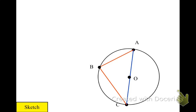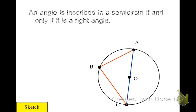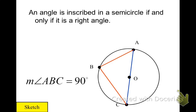So what must be true about angle ABC? Well, it has to be a right angle because the arc is 180, inscribed angle is half the arc.